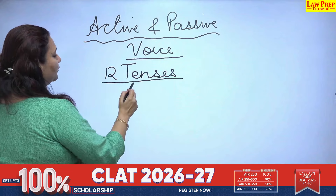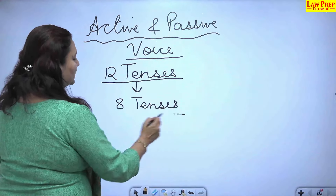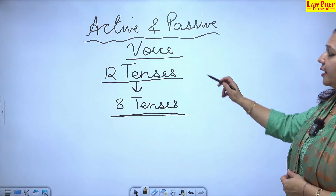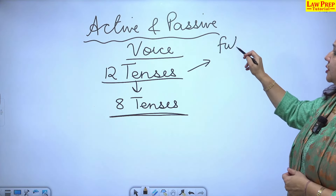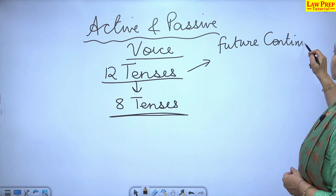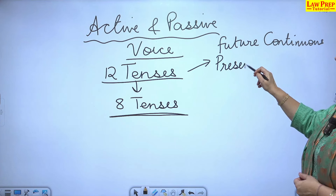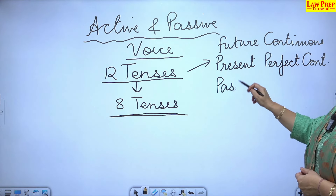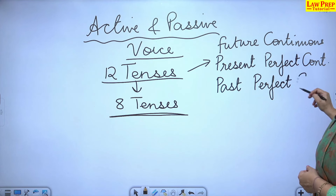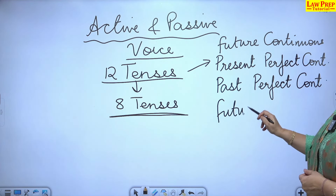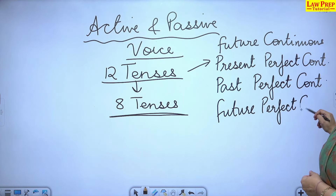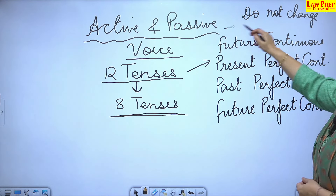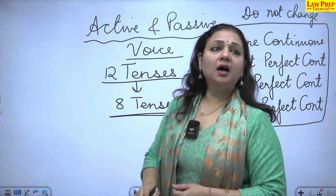There are 12 tenses in English, out of which only eight tenses make the change of active and passive voice. The tenses which do not make this change are: future continuous, present perfect continuous, past perfect continuous, and future perfect continuous. These four tenses do not change.